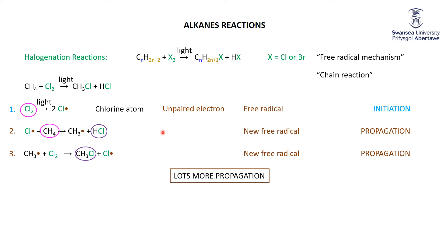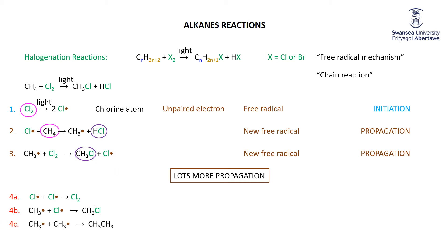Of course, there are possibilities that one reactive free radical will bump into another. Two chlorine free radicals bumping into each other make Cl2 — that's fine, as chlorine is one of our reactants. A chlorine free radical and a methyl free radical bumping together make CH3Cl, which is one of our products — though almost all the CH3Cl is made through the propagation step. The one thing you don't want is a methyl free radical bumping into another methyl radical, making ethane, which is neither a reactant nor a product. All three of these possibilities end the lives of two free radicals, so they are called termination steps.